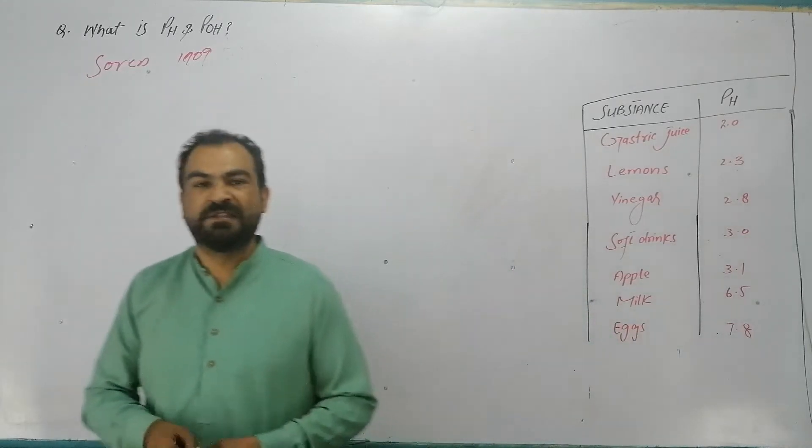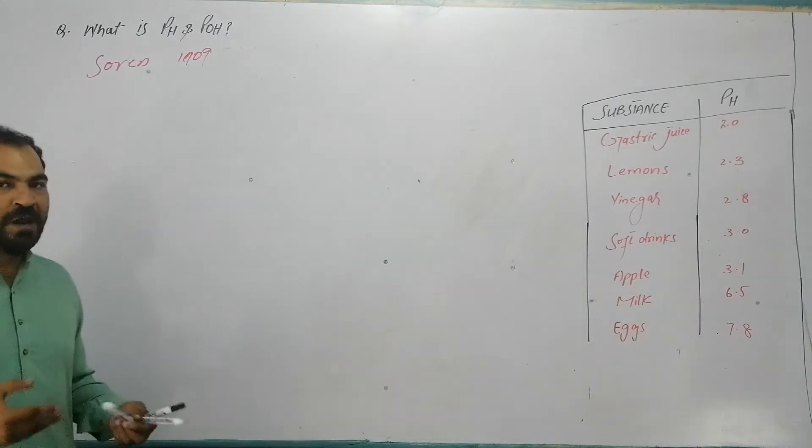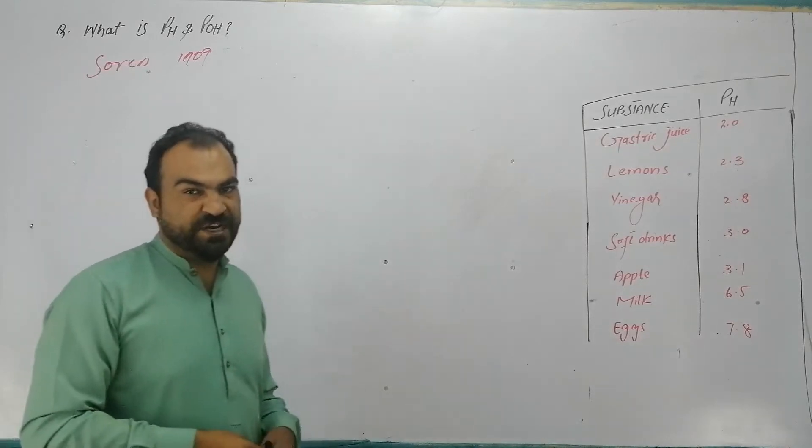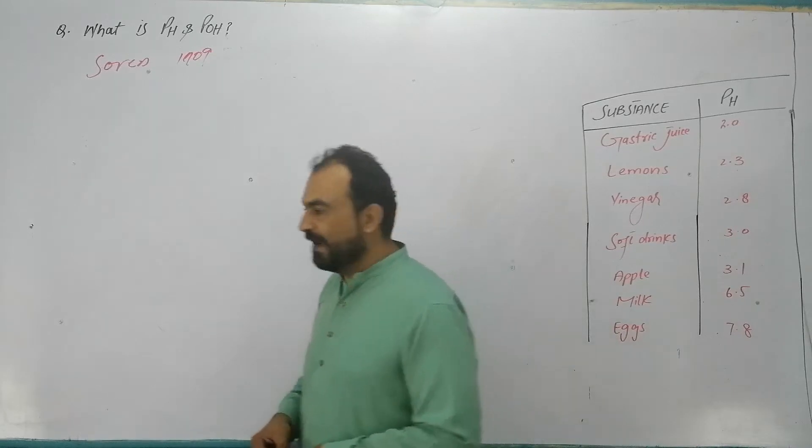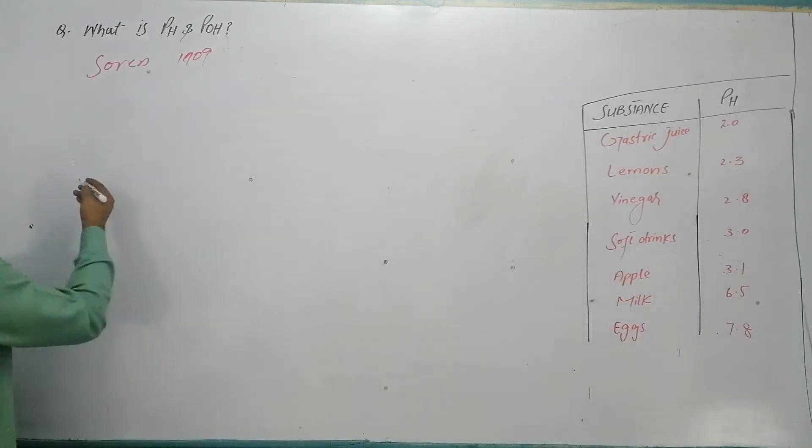The purpose was that small exponential values of H positive ion concentration and OH negative ion concentration could be expressed as whole numbers, because it is very difficult to deal with small exponential values.